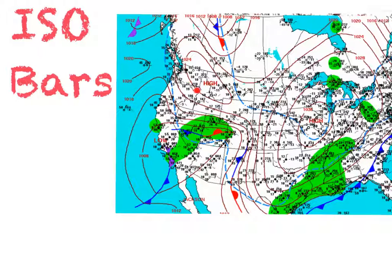Up here in Montana, we have a high pressure system because it's created by a 1024, which is higher than 1013. Over here, we have a 1036, which is creating a high because it is higher than 1013.